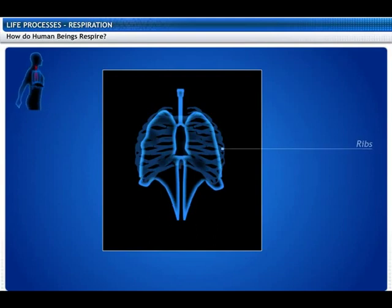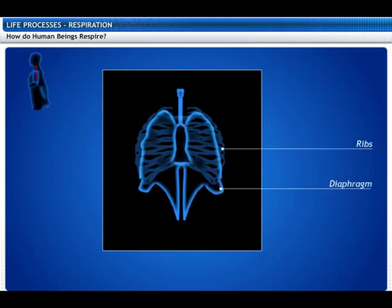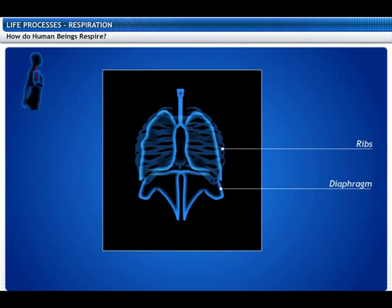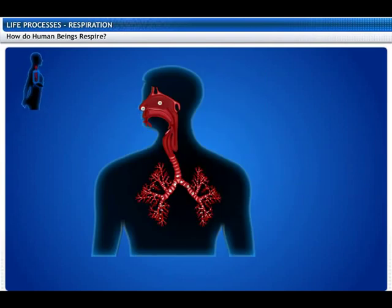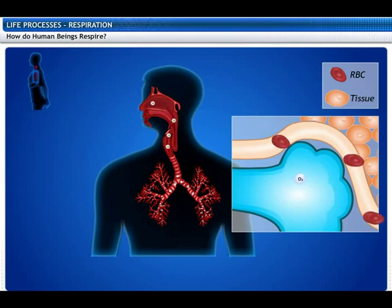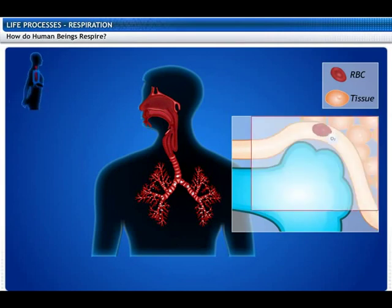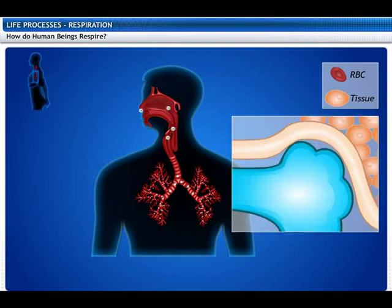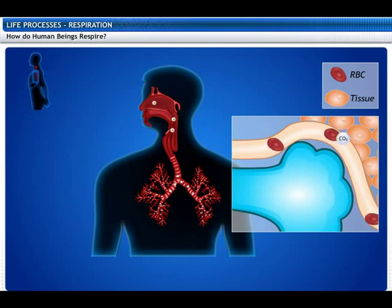When we breathe in, we lift our ribs and flatten our diaphragm, causing the chest cavity to become larger. Air gets sucked into the lungs and fills the expanded alveoli. The oxygen in the alveoli is taken in by the red blood cells in the alveolar blood vessels and then transported to all the cells in the body. The cells in turn release carbon dioxide, which diffuses into the blood and is then released into the alveoli.